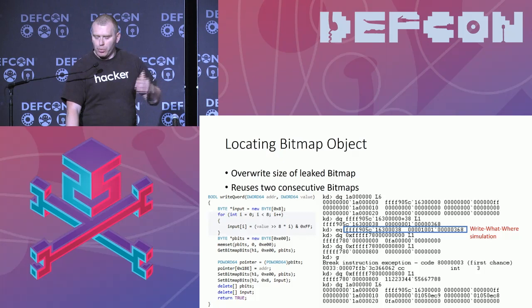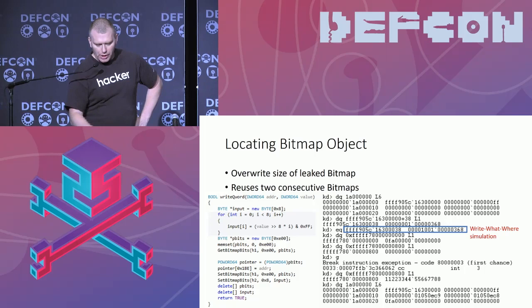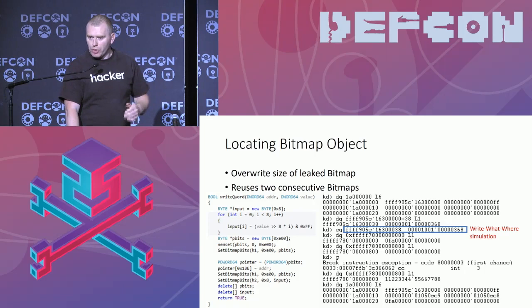So even though Microsoft removed the addresses from the table, it's not really needed. You can simulate a write-what-where just by overwriting the length, and then with a few further executions it's possible to read out and also write to the kernel.